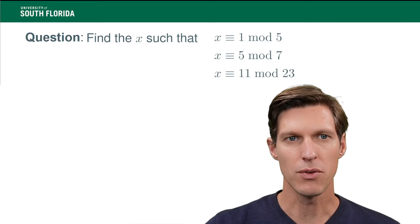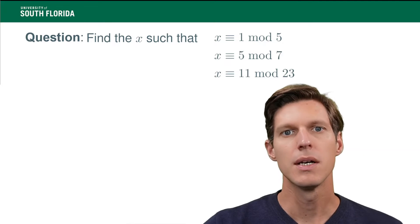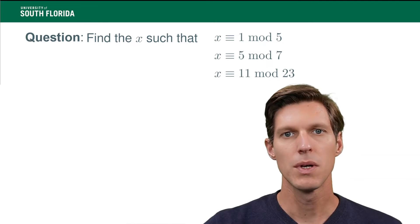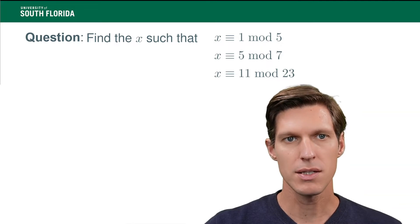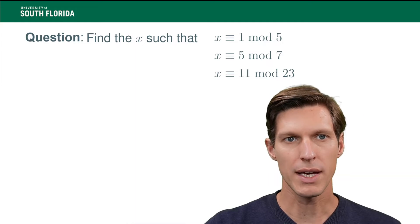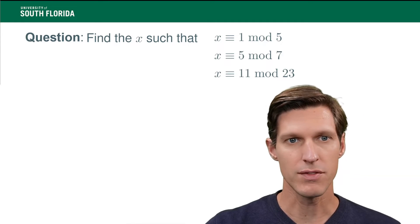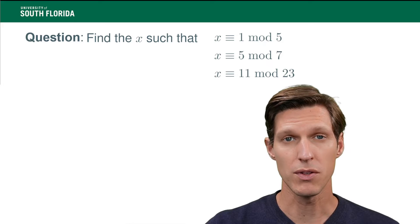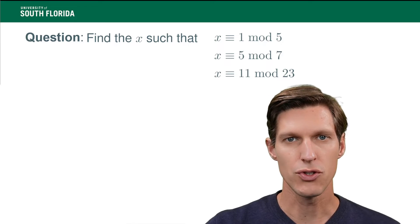Now, the Chinese remainder theorem tells you that because 5, 7, and 23 are co-prime, there exists a single congruence class that contains all the x's, a congruence class mod 5 times 7 times 23 that contains all the solutions x.